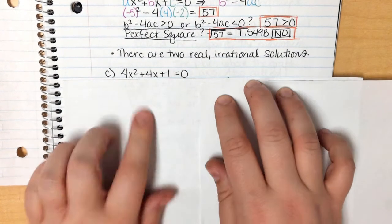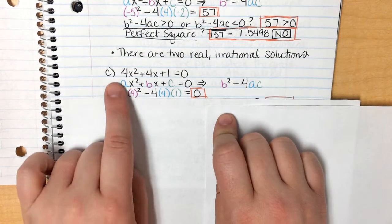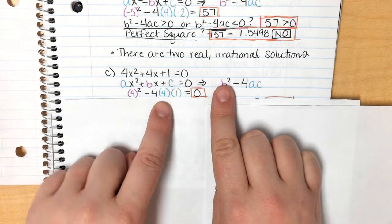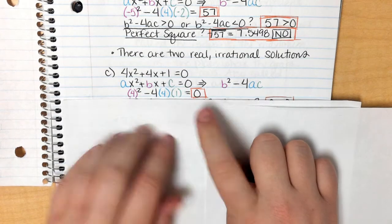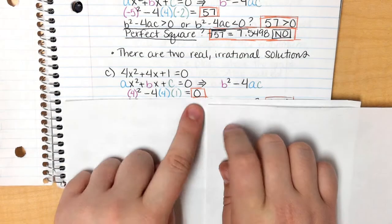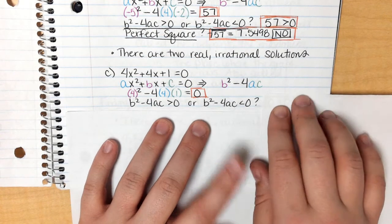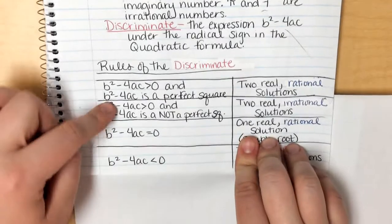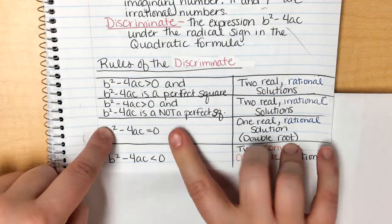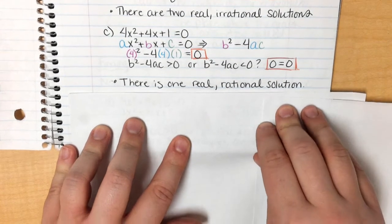Alright, next one. Same thing, 4, 4, and 1. We're going to put it into my discriminant. So 4 goes in for b, 4 goes in for a, and 1 goes in for c because they're all positive. So when you type that in the calculator, it gives you 0. So the question is, is it bigger than 0 or smaller than 0? Well, technically it's neither. It's equal to 0, which means that I can skip everything else because it's either bigger, smaller, or it's equal to. If it's equal to, I'm done. It's one real rational solution. I don't have to do anything else. One real rational solution, all done.